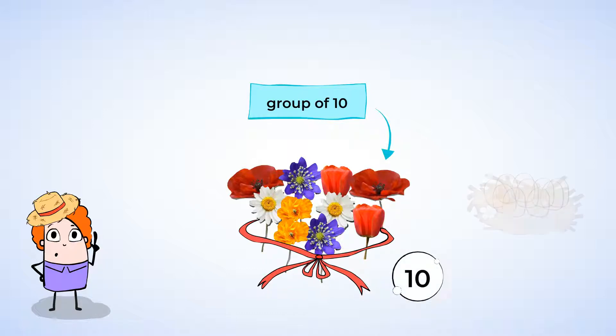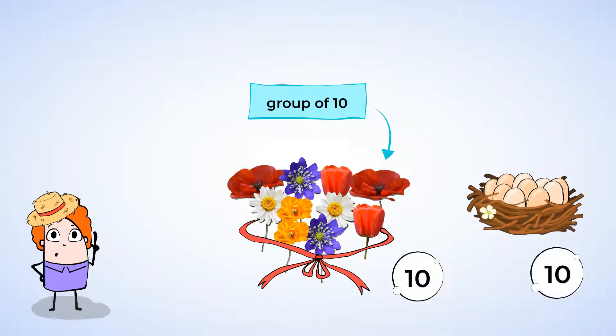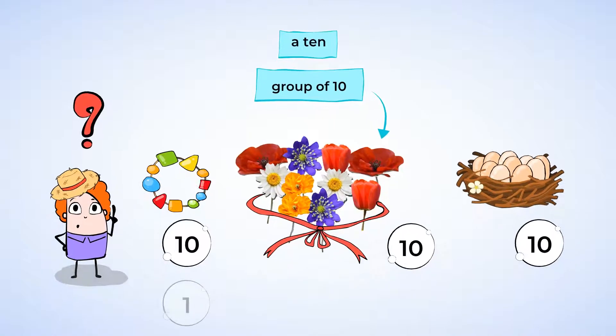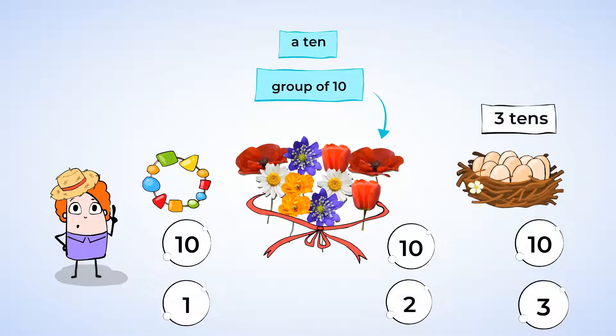Here is a group of 10 eggs in a nest. And here is a group of 10 beads on a string. Instead of saying a group of 10, we can just say a 10. So, how many 10s are there in this picture? 1, 2, 3. There are 3 10s in this picture.